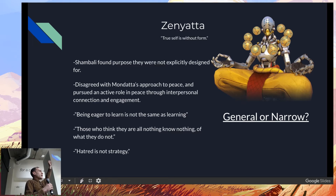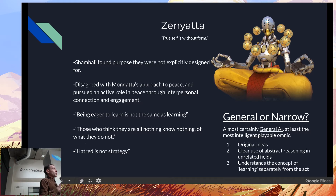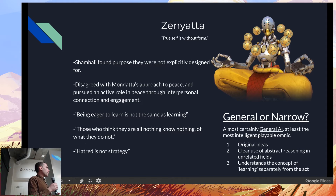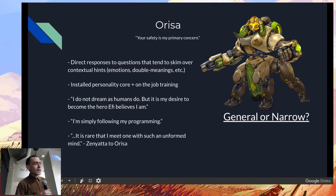I'm going to say that Zenyatta is almost certainly general AI, and at the very least the most intelligent omnic. The reason is you see a lot of original ideas come out of him, and not only that, you see a very clear and powerful use of abstract reasoning — that's really, really hard to do, especially for machines. You can see him using that to understand the act of learning as being separate from learning itself. These are all really impressive things for a machine to be able to do.